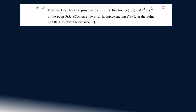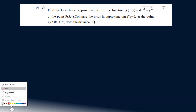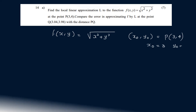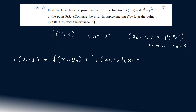We have a local linear approximation. f(x,y) = √(x² + y²). The point (x₀, y₀) is P(3, 4), so x₀ = 3, y₀ = 4. The local linear approximation formula is: L(x,y) = f(x₀, y₀) + fx(x₀, y₀)(x − x₀) + fy(x₀, y₀)(y − y₀). So L(x,y) = f(3,4) + fx(3,4)(x − 3) + fy(3,4)(y − 4).